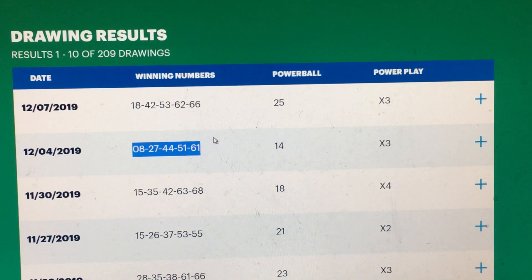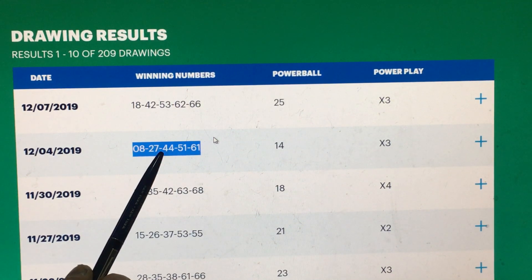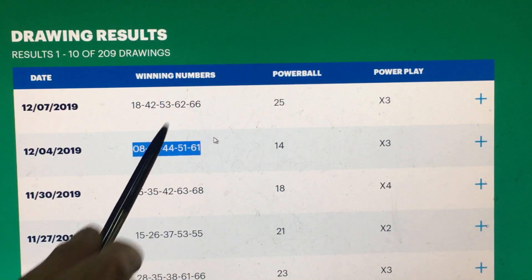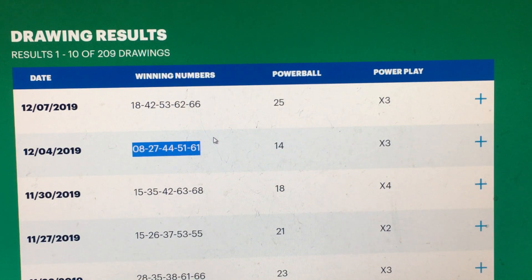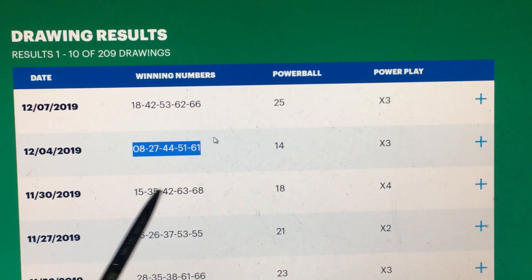Now, 27, 27 opposite attracts 27. So any 27 getting drawn? No. 44 opposite attract 44. So 44 didn't get drawn. 51 opposite attracts 15. No 15. And 61 opposite attracts 16. So 16 didn't get drawn either. So opposite attraction does help out also.